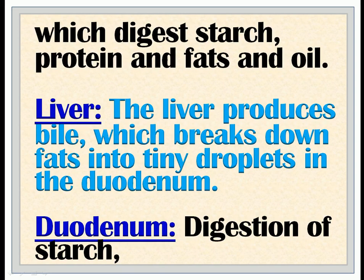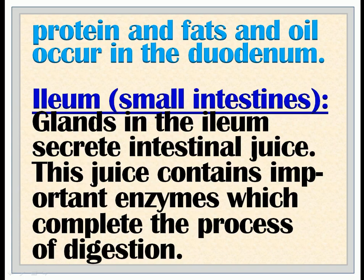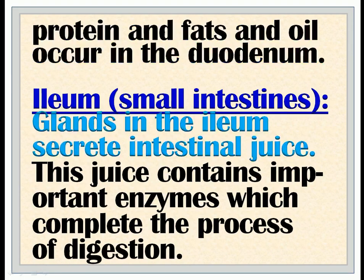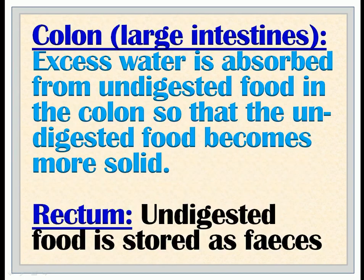Liver: The liver produces bile, which breaks down fats into tiny droplets in the duodenum. Duodenum: Digestion of starch, protein, and fats and oils occurs in the duodenum. Ileum (small intestines): Glands in the ileum secrete intestinal juice. This juice contains important enzymes which complete the process of digestion. Colon (large intestines): Excess water is absorbed from undigested food in the colon, so that the undigested food becomes more solid.